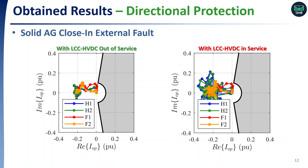Finally, we show results for the directional protection function. Here we depict the response of the zero-sequence directional function of the relay at the remote bus for the same AG closing external fault. As one can see, regardless of whether the LCC bipoles are in service or out of service, the relay sees a reverse fault, as expected. Thereby, a false trip issue is avoided when the directional elements are combined with teleprotection schemes such as POTT and DCB. However, in the case of negative-sequence directional elements, it is recommended not to use small pickup values to ensure security for external faults.